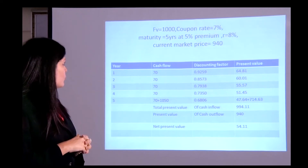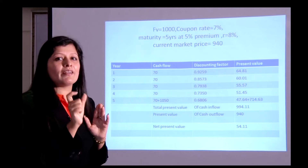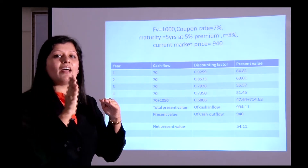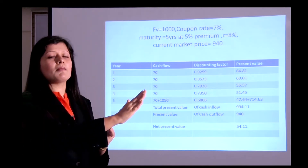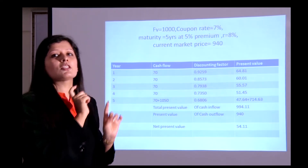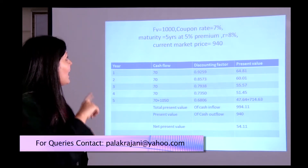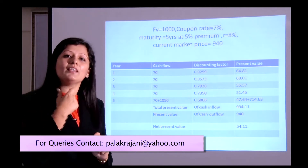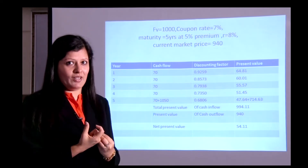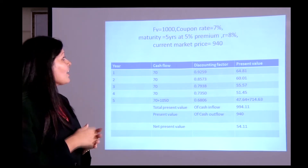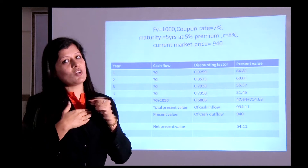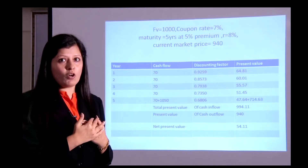Let's look at an example. A bond has a face value of 1,000, coupon rate of 7%, maturity of 5 years, and a 5% premium at maturity. Remember: the coupon interest is always calculated on the face value, not the purchase price. The required rate of return r is 8% — that's what the investor wants — and the current market price is 940. Will you buy this bond at 940 if you require 8%? Let's see.